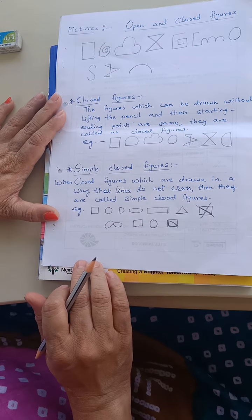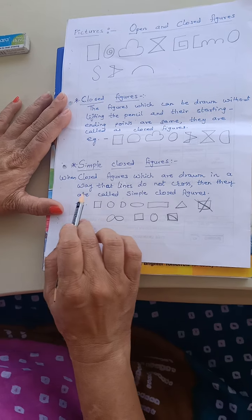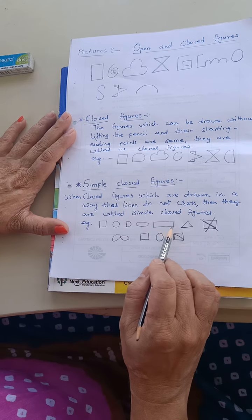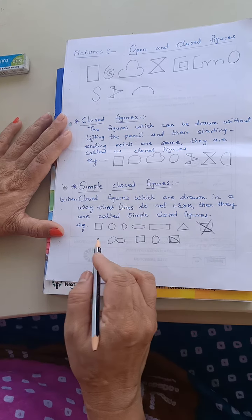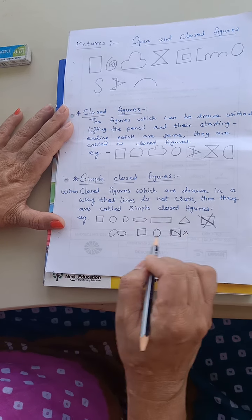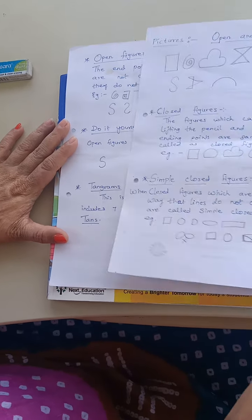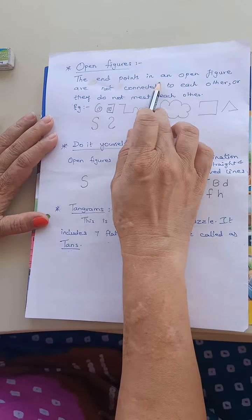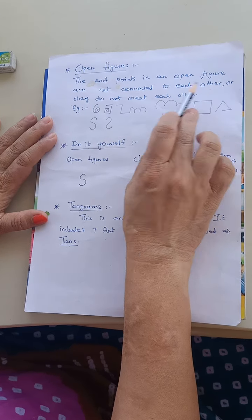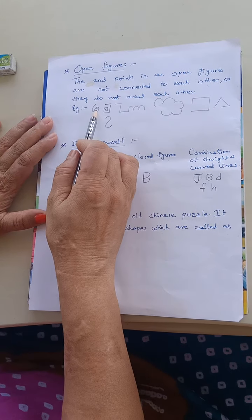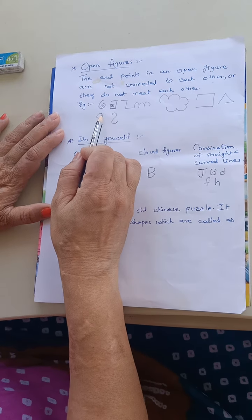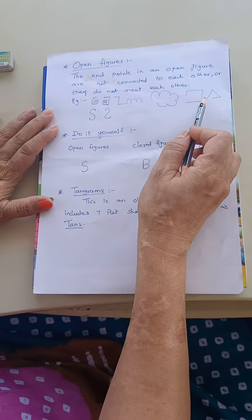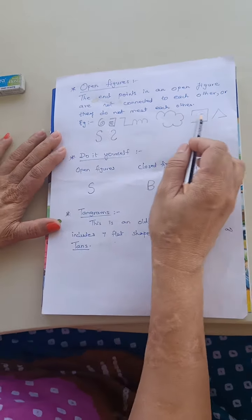Now see here simple closed figures. Closed figures which are drawn in a way that the lines do not cross each other are called simple closed figures. But some figures cannot be called simple closed figures. In an open figure, the end points are not connected to each other. All these figures have different starting and ending points, and every figure has an opening, so it is called an open figure.